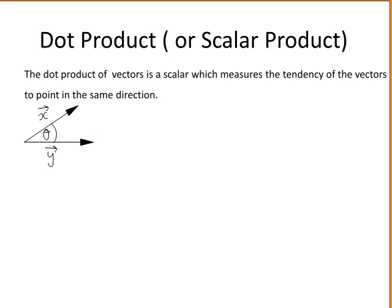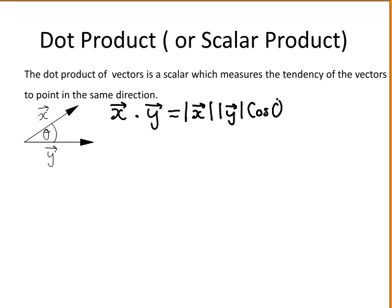The dot product of vectors is a scalar, which measures the tendency of the vectors to point in the same direction. Here we have vector x and vector y, where theta is the smaller angle between them. The dot product of vector x with y, written like this, is equal to the modulus of vector x times the modulus of vector y times the cosine of the smaller angle between vector x and vector y. The answer is a scalar, which is just a number.